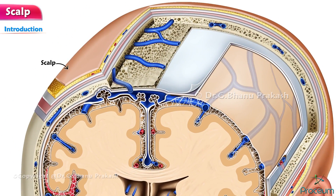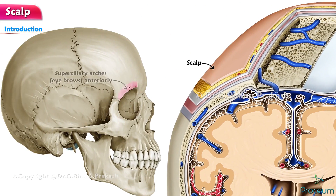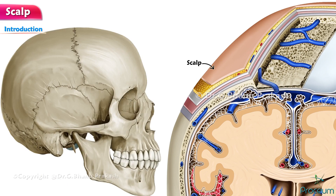The term scalp is applied to the soft tissues covering the vault of skull. The scalp is a part of the head that extends from the supraciliary arches or the eyebrows anteriorly to the external occipital protuberance and superior nuchal lines posteriorly. Laterally, it continues inferiorly to the zygomatic arch.